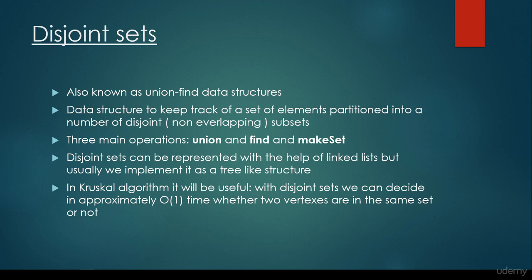You may pose the question: what does disjoint set have to do with minimal spanning trees, Kruskal's algorithm, and so on? Basically, in Kruskal's algorithm it will be very useful. This data structure can boost up the running time of the Kruskal algorithm, because with disjoint sets we can decide in approximately O(1), so constant time complexity, whether two vertices are in the same set or not.